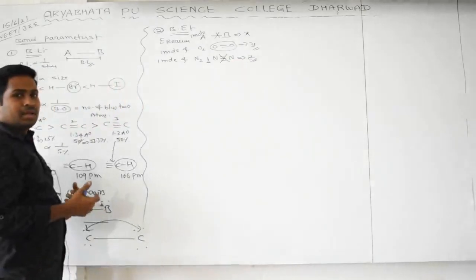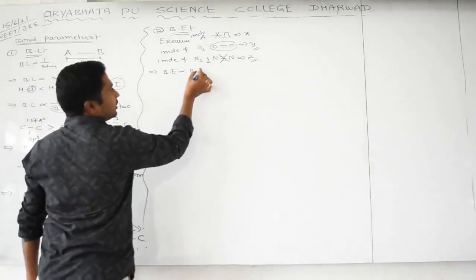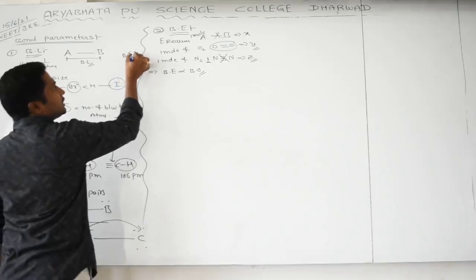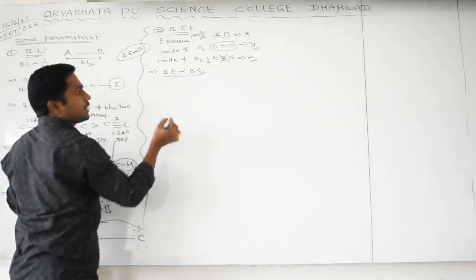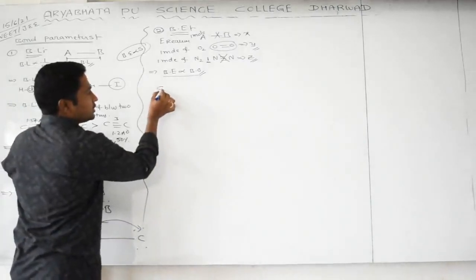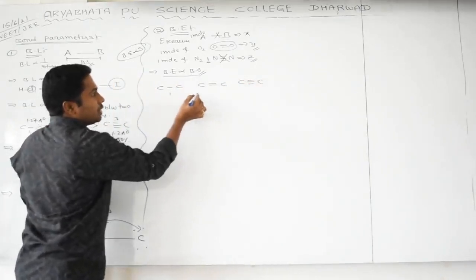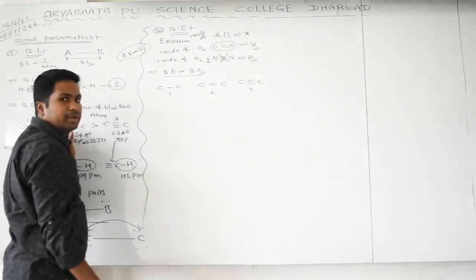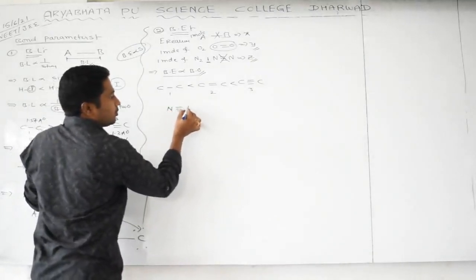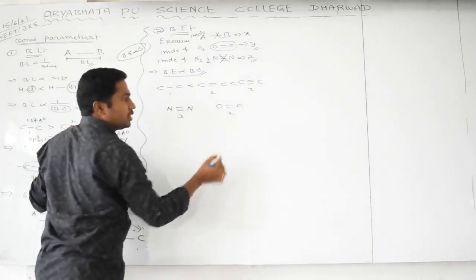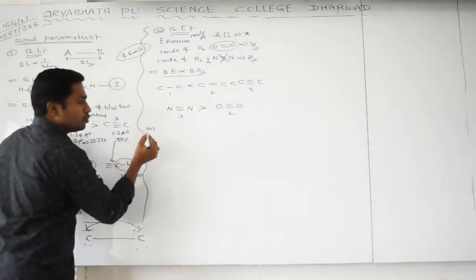Bond energy is directly proportional to bond order and directly proportional to stability. More bond energy means more stable molecule. For example, C–C single bond, C=C double bond, and C≡C triple bond — the triple bond is the most difficult to break. Similarly, nitrogen triple bond has bond order 3 and higher bond energy than oxygen double bond with bond order 2.